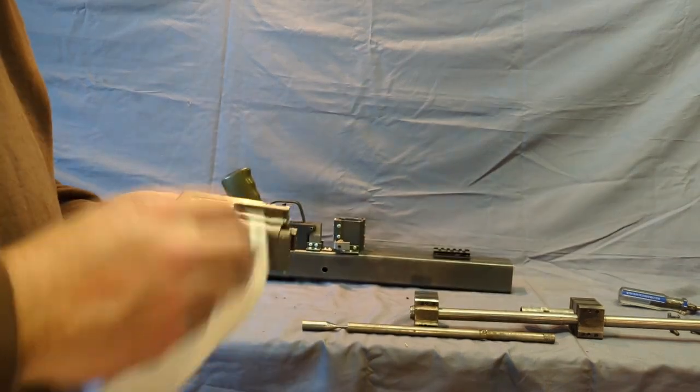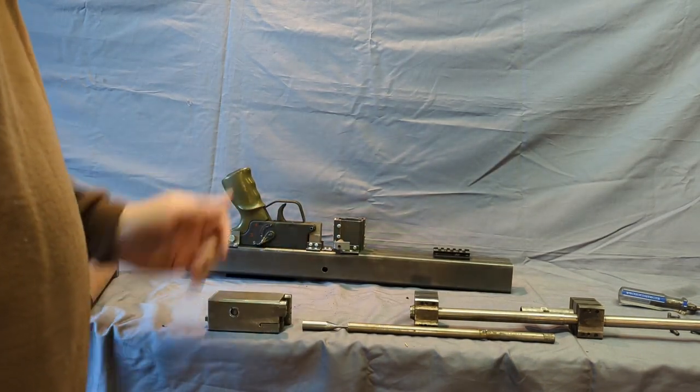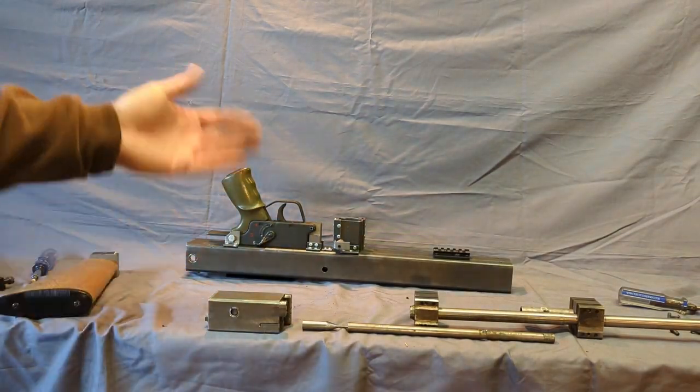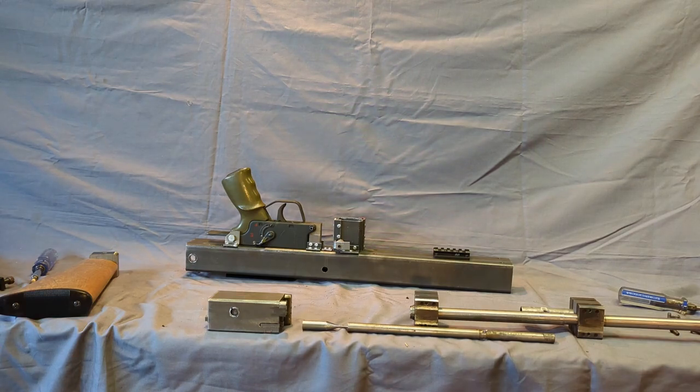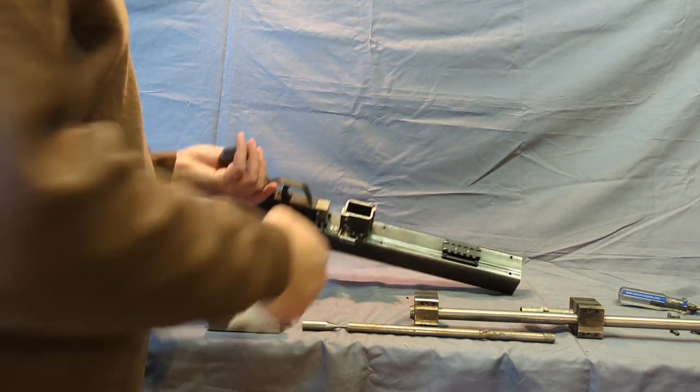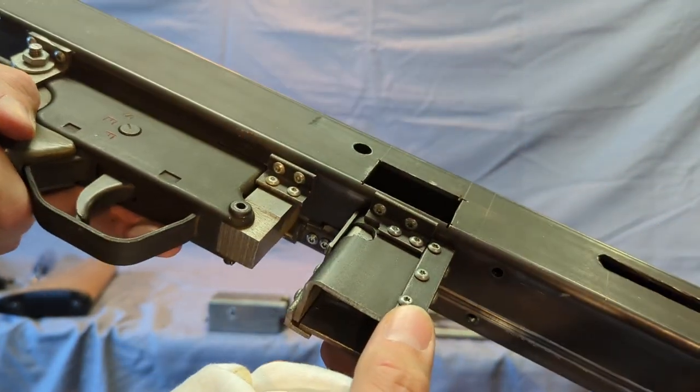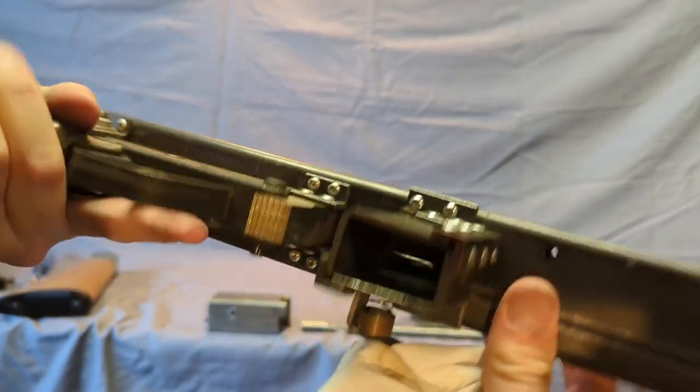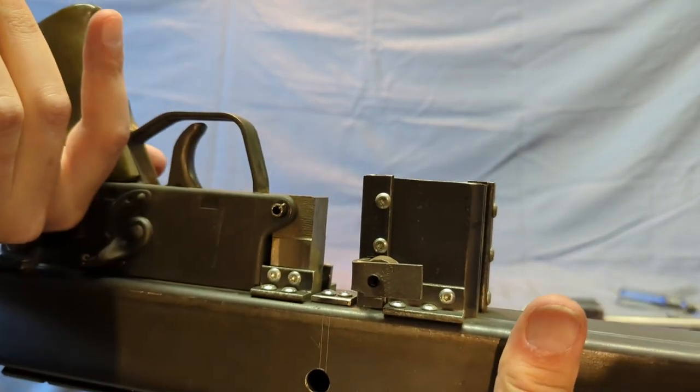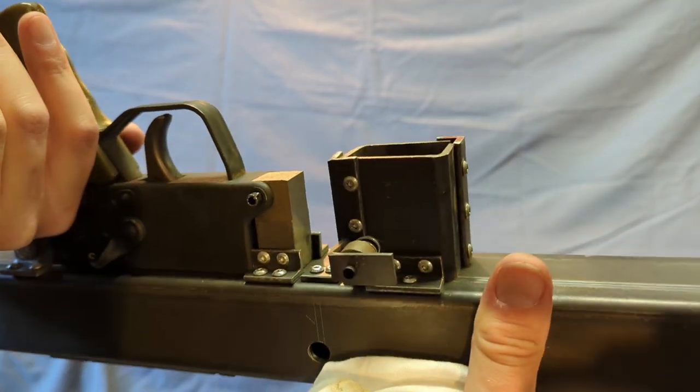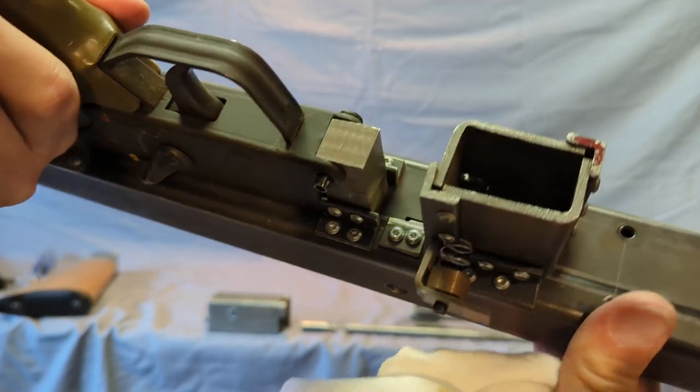And again, that's just an H&K or a CETME trigger housing. It's just got a hammer. I won't take that apart—no sense in showing how that works. Unless you want a bigger look, a better look at the magazine housing here. Again, didn't have a mill or a lathe, so it's all screwed together. I could screw it together—probably broke a few taps there. I'm not gonna take that apart because I'll probably never get it back together.